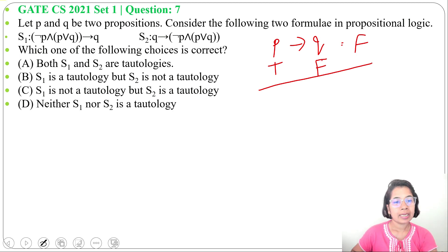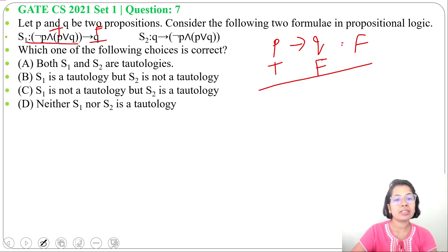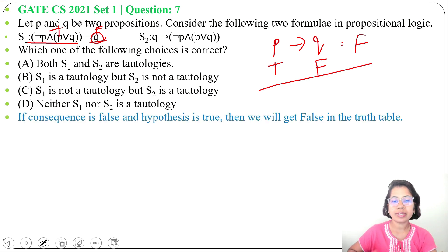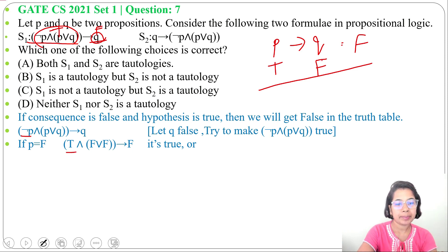For S1 — negation P, and P or Q, implies Q — I will try to make the antecedent true and the consequent false to see if the implication can be false. I'm solving by contradiction: if we can make it false, it's not a tautology. Let Q be false and consider P as false. When P is false, negation P is true. Then P or Q is false or false, which is false.